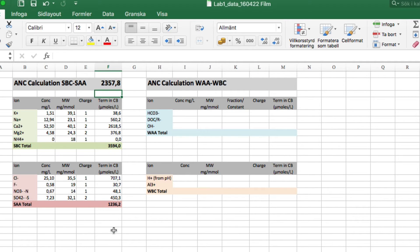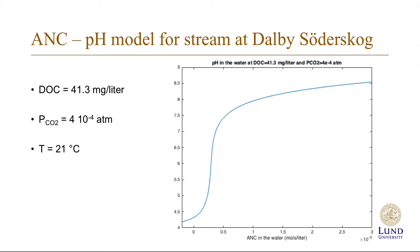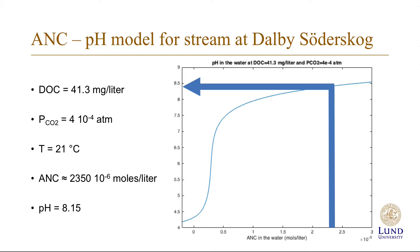The ANC comes out to 2357 micromoles per liter. I have made a corresponding diagram over a wider range of ANC, with calculations for DOC of 41.3 mg per liter and ambient carbon dioxide pressure. The ANC was about 2350 and the measured pH was 8.15. The diagram predicts a pH of about 8.40 — there is a mismatch between the model pH and the measured pH, with the model over-predicting the pH in both cases.